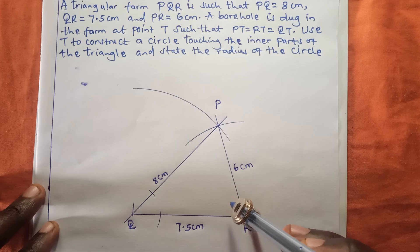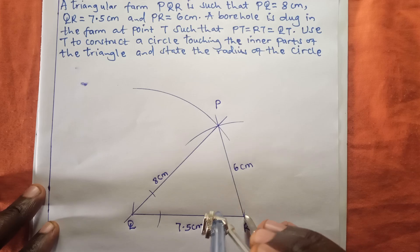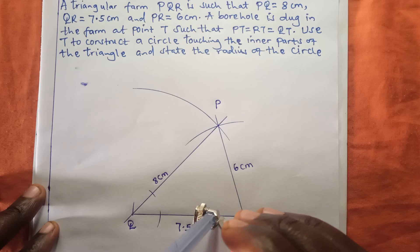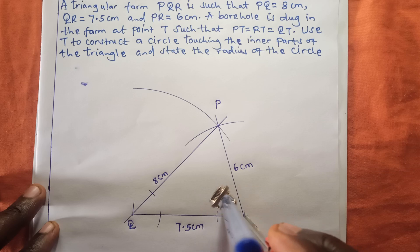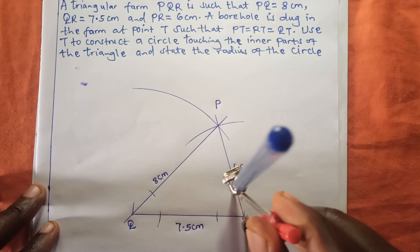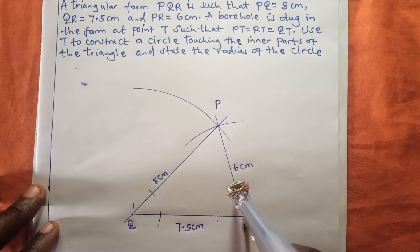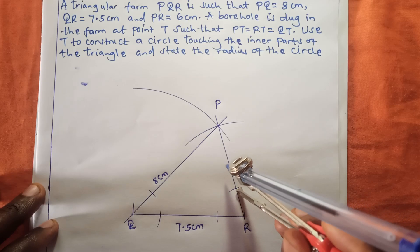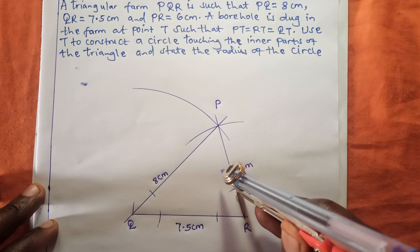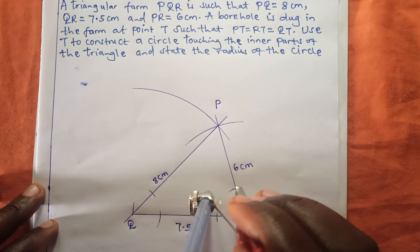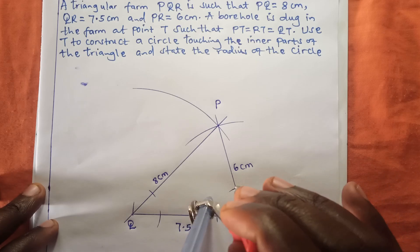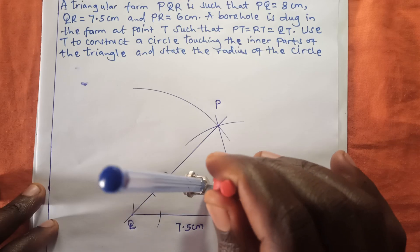I will bisect angle R by making an arc down here on line QR, and I will also make another arc on line PR. The next thing I'm going to do is make arcs inside this triangle in the process of bisecting angle R, dividing this angle.